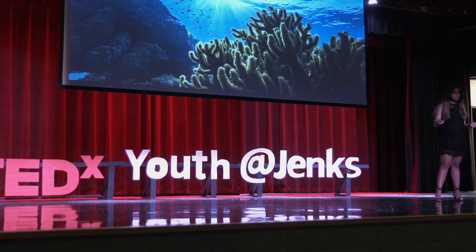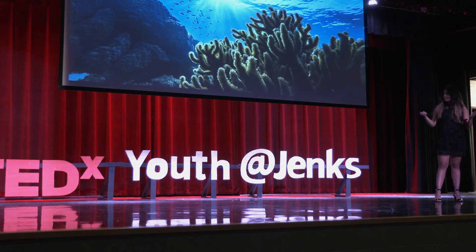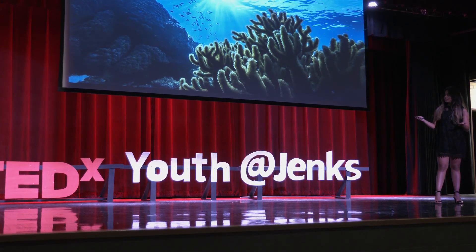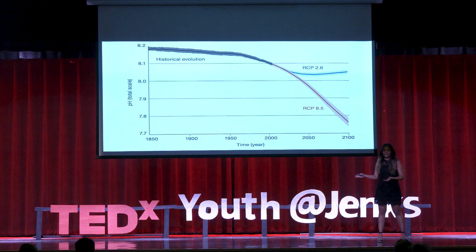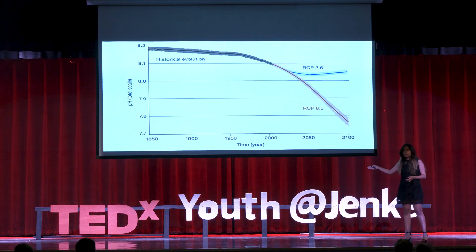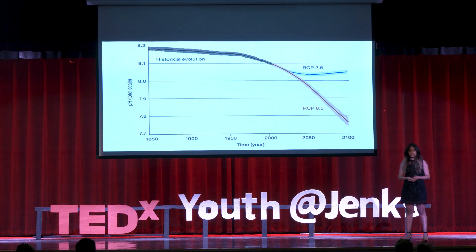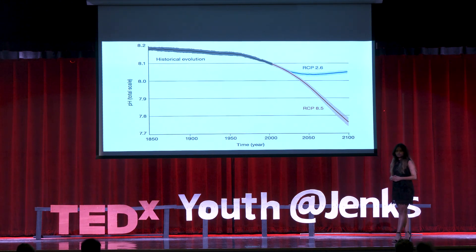As years go by — and as you can see on this graph — in 2100, the pH of the ocean will be drastically reducing to an acidic level. This is a major problem to marine life and ultimately affects everyone around us. Thank you.